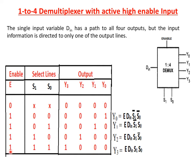When the enable input is 1, the D-multiplexor is activated. For selection lines 0,0, output Y0 is selected, and the output expression is E · D-in · S1 bar · S0 bar. For 0,1 combination, output Y1 is selected with expression E · D-in · S1 bar · S0. For 1,0 combination, Y2 is selected with expression E · D-in · S1 · S0 bar. For 1,1 combination, Y3 is selected with expression Y3 = E · D-in · S1 · S0. This is the working of D-multiplexor with active high enable.